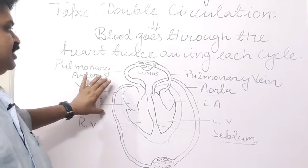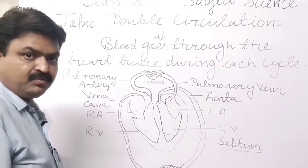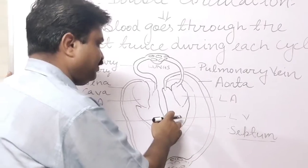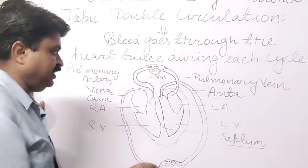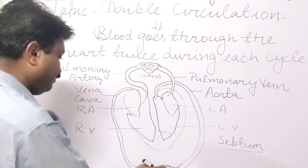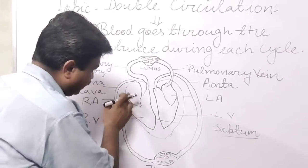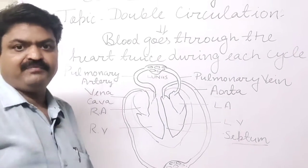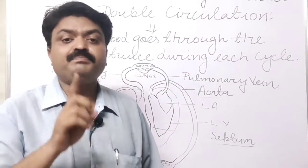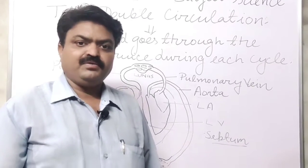In double circulation, pulmonary veins supply oxygenated blood to the heart. From there, it is pumped towards the aorta, and the aorta supplies it to the different organs. From the organs, the blood is supplied back to the vena cava. There are two vena cavas in our body: the superior vena cava, which supplies impure blood from the upper part, and the inferior vena cava, which supplies impure blood from the lower part.